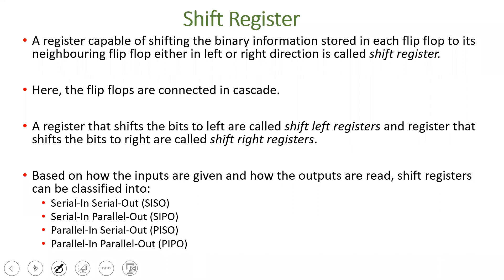A flip-flop is a storage device that can store one bit of information. If you want to store more than one bit of information, you go for registers. A register is capable of shifting data — left-to-right is a shift-left register, and right-to-left is a shift-right register. A register is a group of flip-flops connected in series, or cascade.